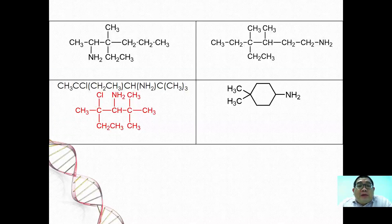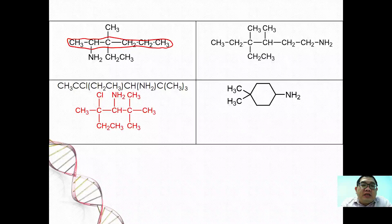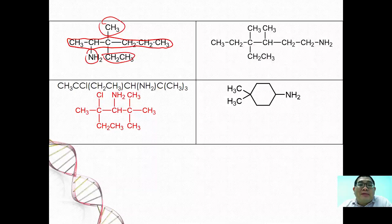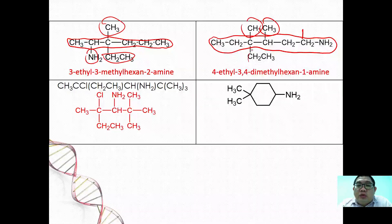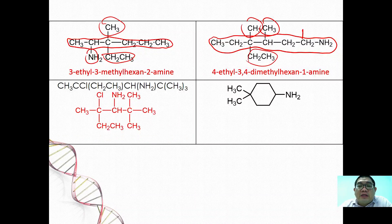For primary amine examples: if the longest chain is 6 carbons and NH₂ is on the second carbon, it is hexan-2-amine. With an ethyl and a methyl substituent at C3, the full name is 3-ethyl-3-methylhexan-2-amine. In another example with 6 carbons and nitrogen on C1, giving hexan-1-amine, with CH₃ and CH₂CH₃ groups the name becomes 4-ethyl-3,4-dimethylhexan-1-amine.